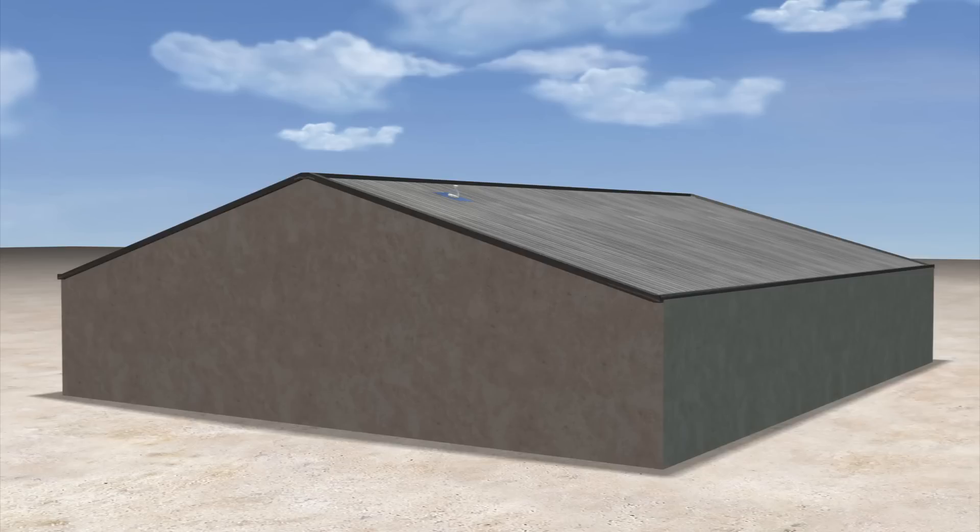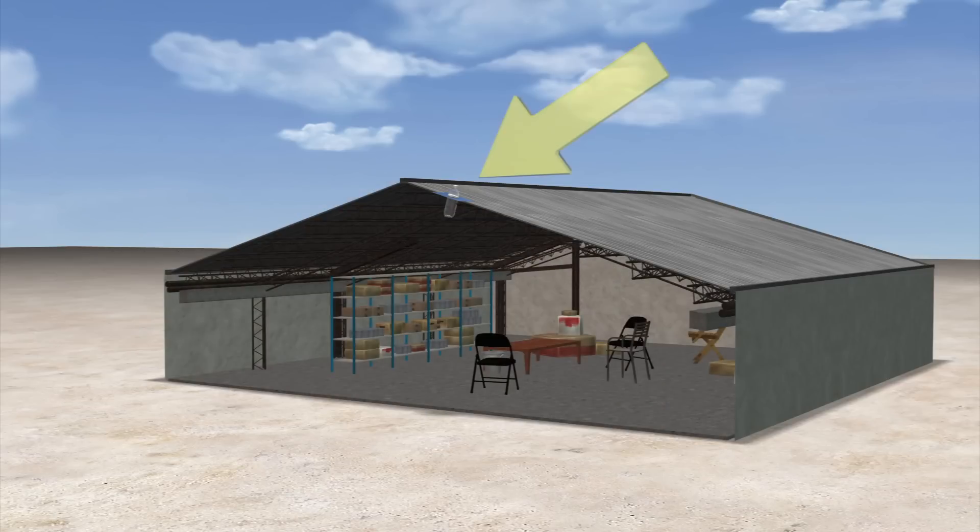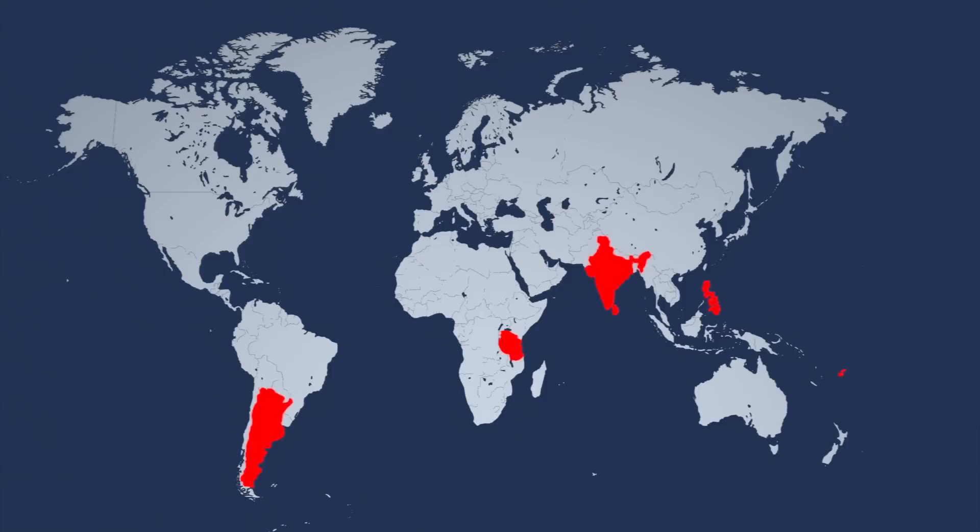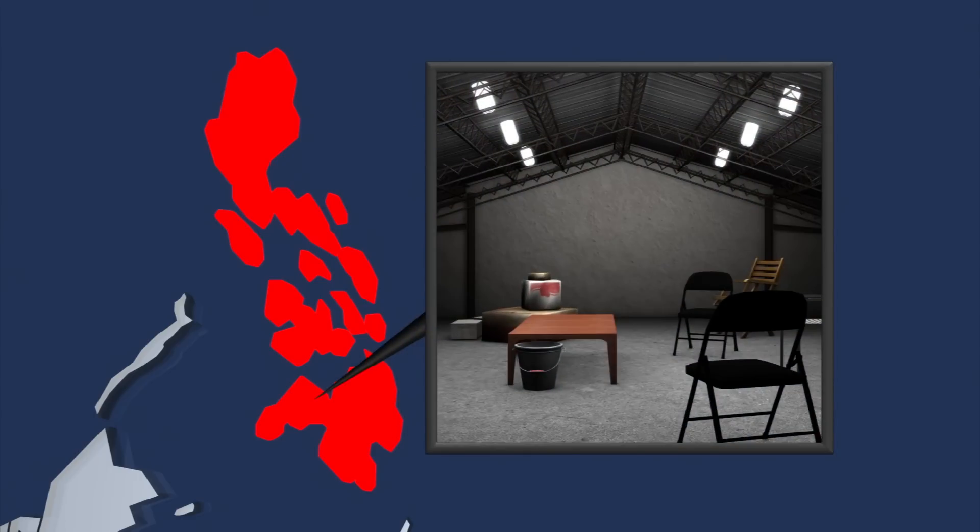Moser lamps have been reportedly used in 16 countries around the world, including Argentina, Tanzania, India, Bangladesh, Fiji and the Philippines.